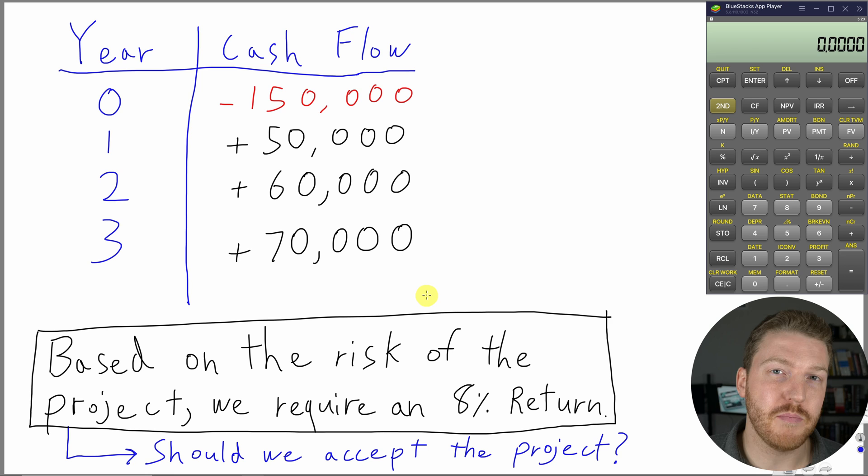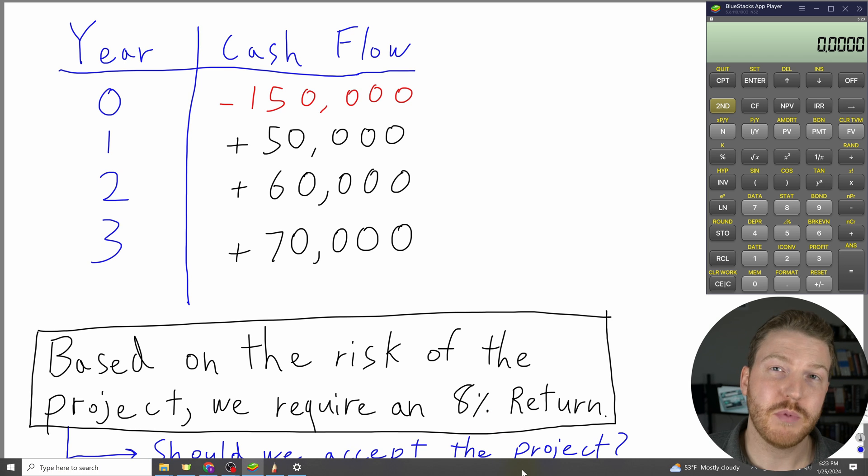We've also determined that based on the risk of the project, we're going to require that we get at least an 8% return on this project for it to be worth it for us. Should we accept the project?